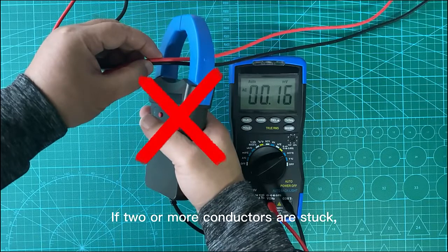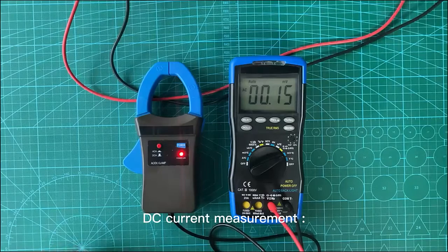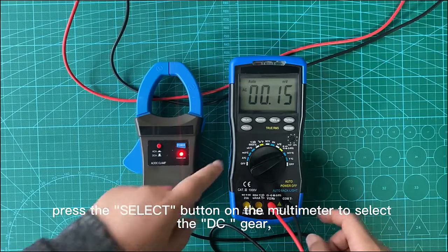If two or more conductors are stuck, the measurement will be invalid. DC current measurement: Press the select button on the multimeter to select the DC gear.